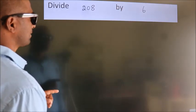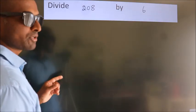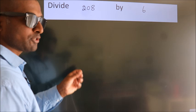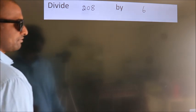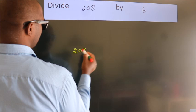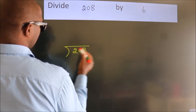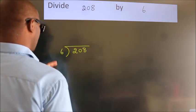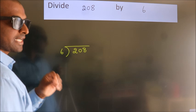Divide 208 by 6. To do this division, we should frame it in this way: 208 here, 6 here. This is your step 1.